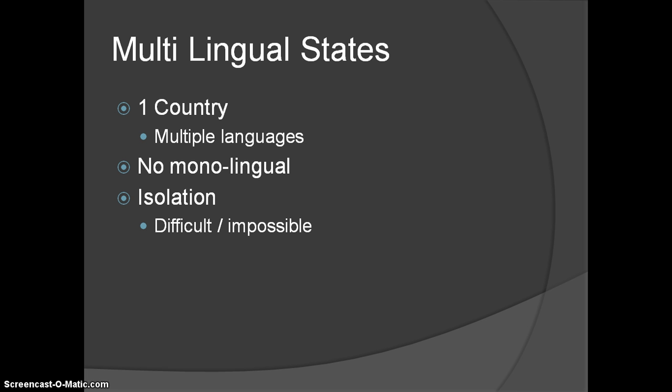In times past, it would have been easier to find a small state or kingdom where only one language was spoken. But in today's world, because of globalization, it's much more difficult for states or people to live in isolation. So it's pretty much impossible to have a situation where only one language is spoken, and every country would be considered a multilingual state.